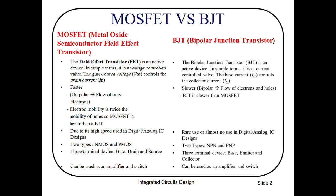Unipolar means only flow of electrons or holes. We know that electron mobility is twice the mobility of holes, so MOSFET is faster than BJT. Due to high speed, MOSFETs are used in digital and analog integrated circuits designed today; we no longer use BJT in digital and analog integrated circuits. MOSFETs have two types — NMOS and PMOS — and BJT also has two types — NPN and PNP. MOSFET has three terminals: gate, drain, and source; BJT also has three terminals: base, emitter, and collector. Both devices are used as an amplifier and switch.